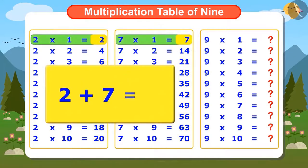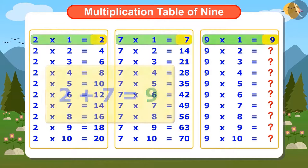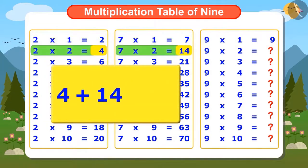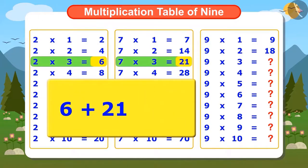By adding 2 and 7, the answer will be 9. By adding 4 and 14, we get 18. After adding 6 and 21, we get 27.